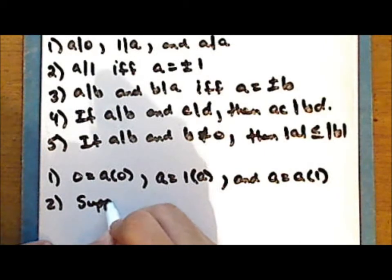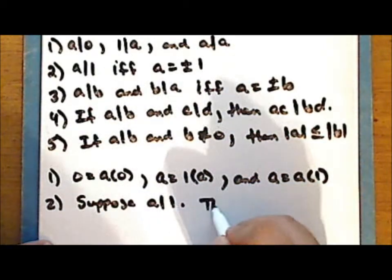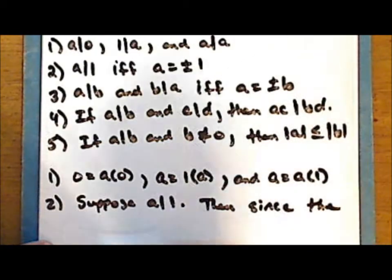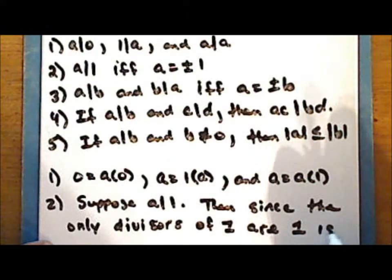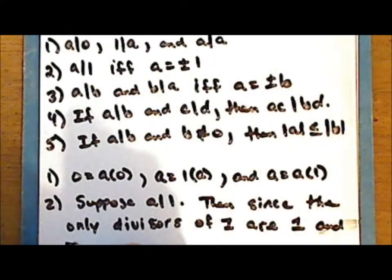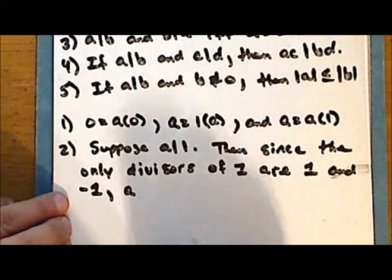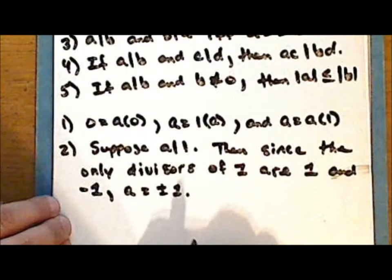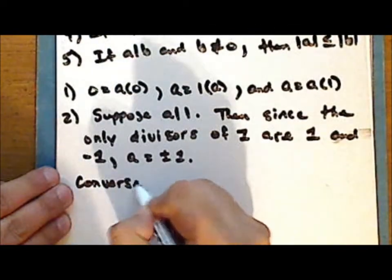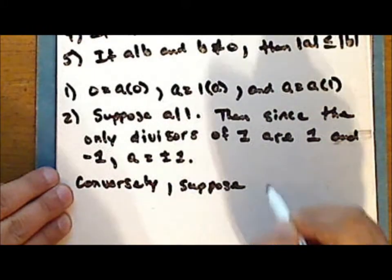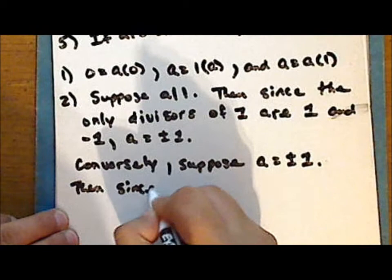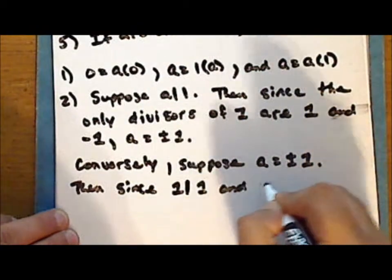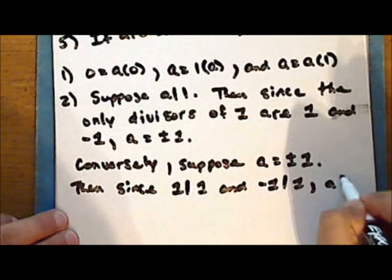Second statement: suppose that a divides one. Then, since the only integer divisors of the number one are the number one itself and negative one, we have that a must be one of these numbers, so a is plus or minus one. Conversely, suppose that a is either one or negative one. Then, since one divides itself and negative one divides the number one, we have that a divides the number one.